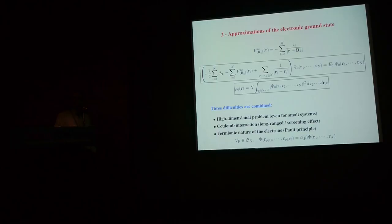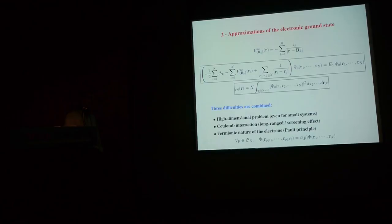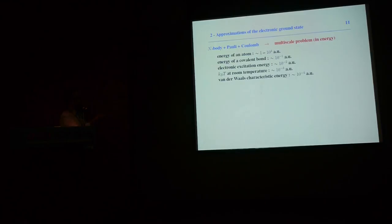It's important to note that if you remove one of these difficulties, the problem becomes much easier to solve. For instance, if you do not account for the anti-symmetry constraints, it is possible to compute things very efficiently using quantum Monte Carlo methods. But because of these fermionic constraints, quantum Monte Carlo methods do not work as well as they would for bosons.